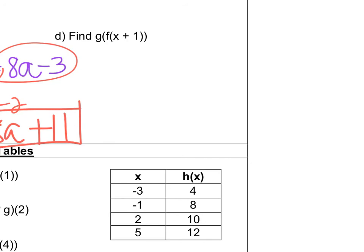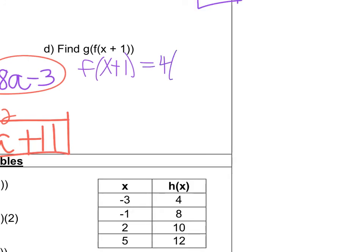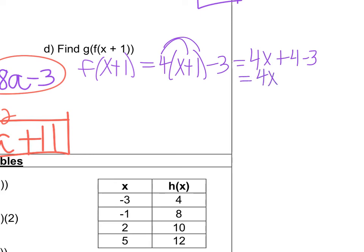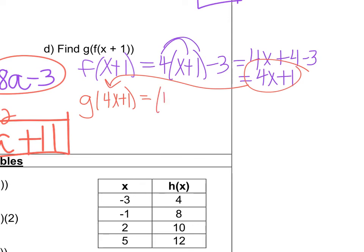Now let's move on to G of F of x plus 1. I need to start with the F equation again. I'm going to plug in x plus 1 in place of x, so that would become 4 times (x plus 1) minus 3. I need to distribute out the 4, so this would become 4x plus 4 minus 3, which would equal 4x plus 1. But I can't stop there — I need to take 4x plus 1 and plug it into the G equation.